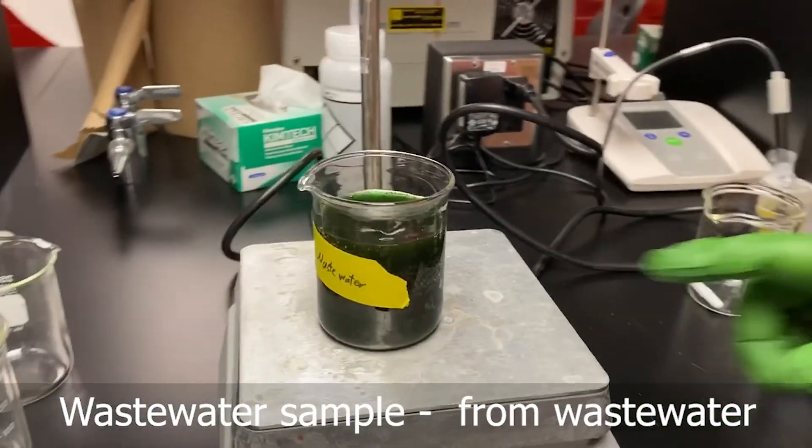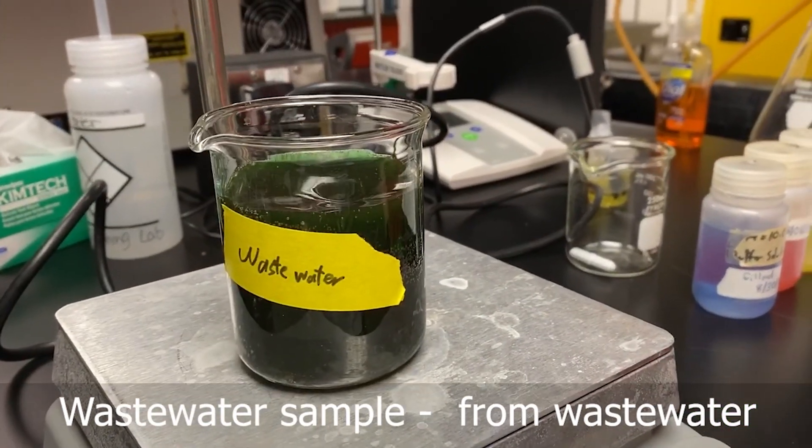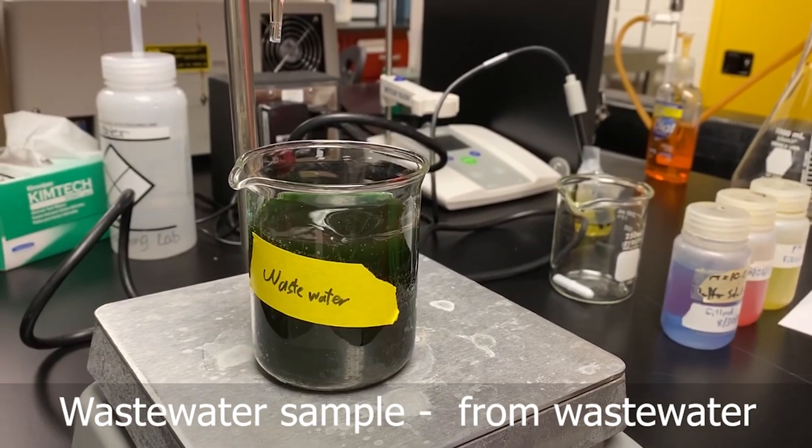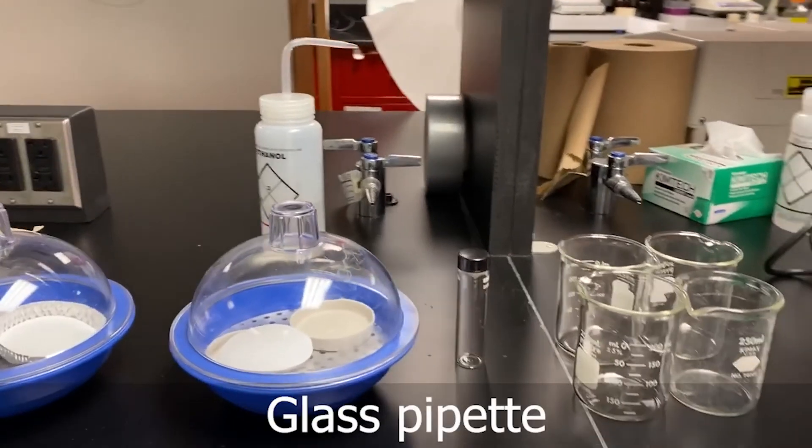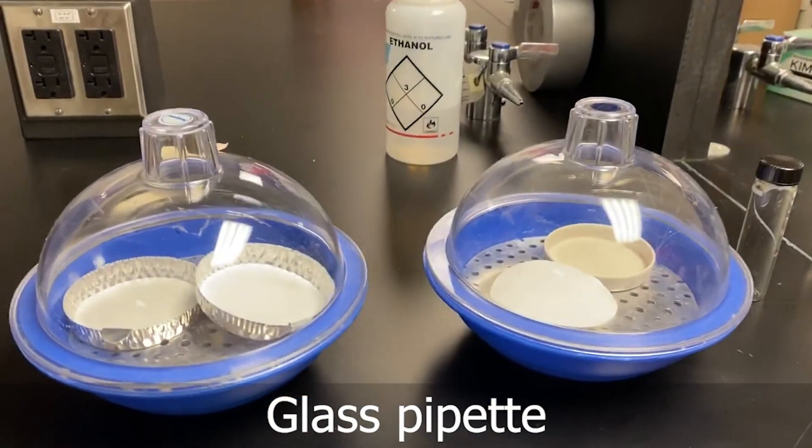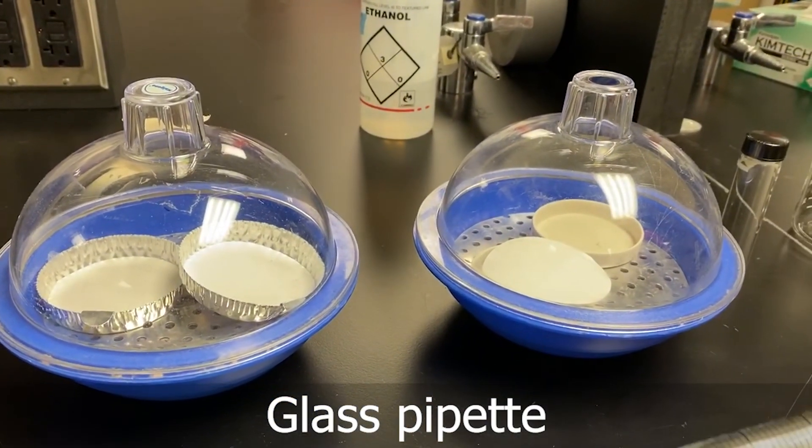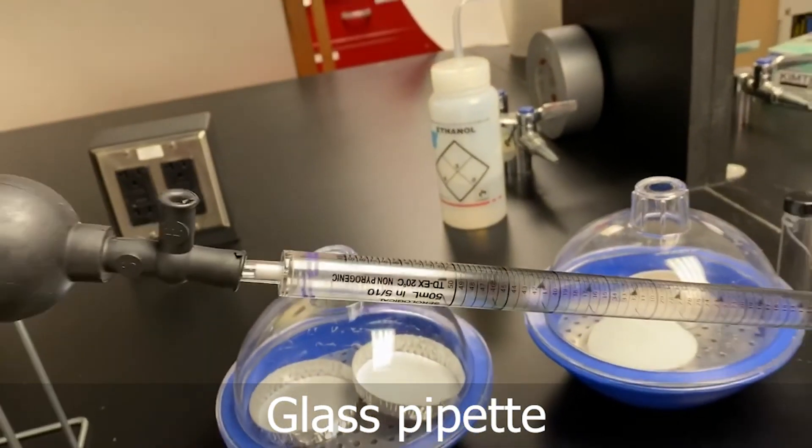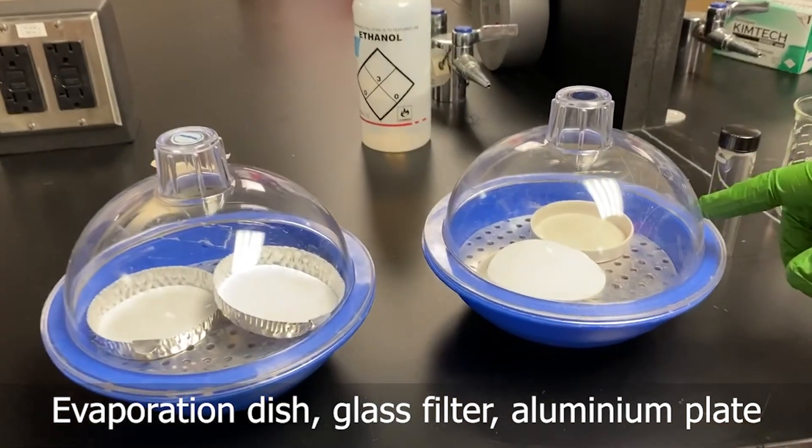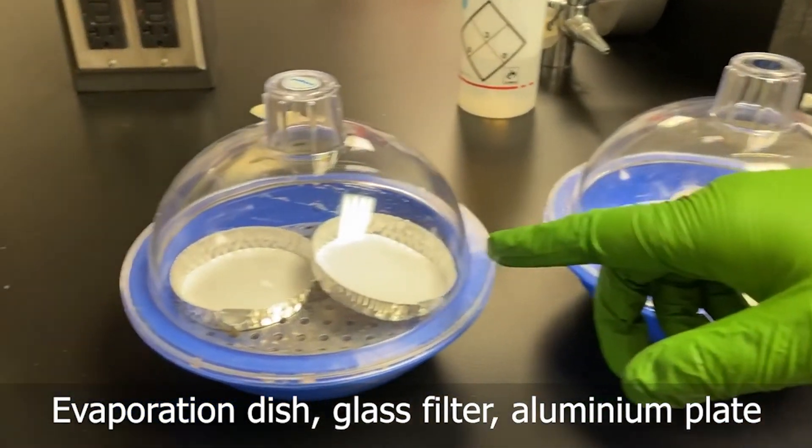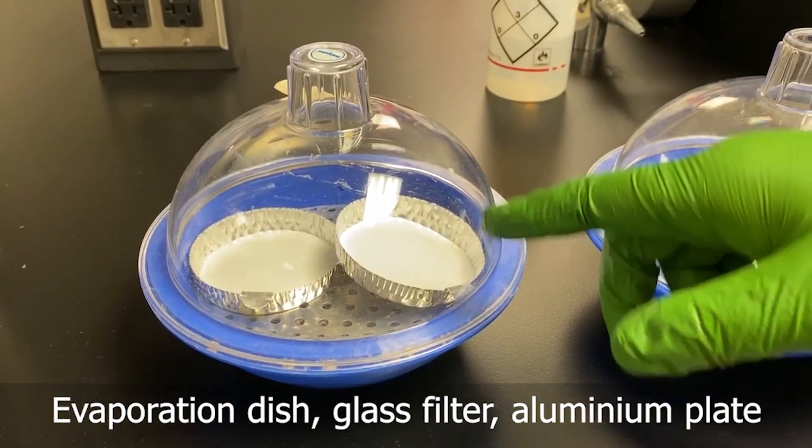So this is a sample, and this sample is the wastewater taken from the wastewater treatment plant. For this experiment, we need a glass plate test to grab the wastewater sample like this one, and we also need an evaporation dish, a filter, and aluminum plates like here.